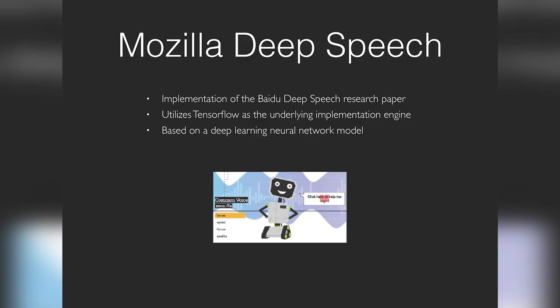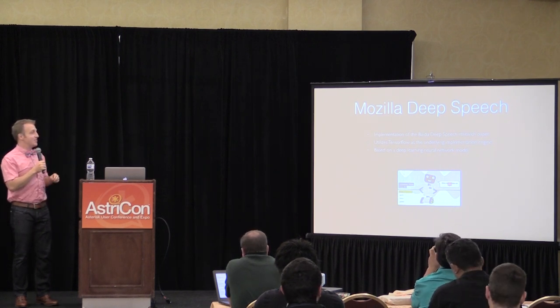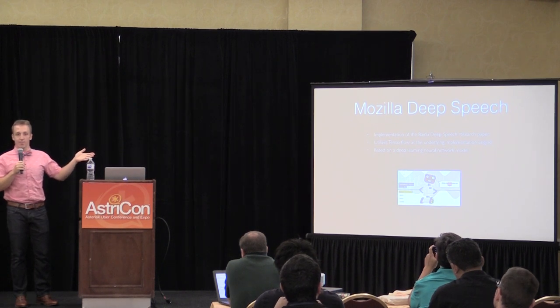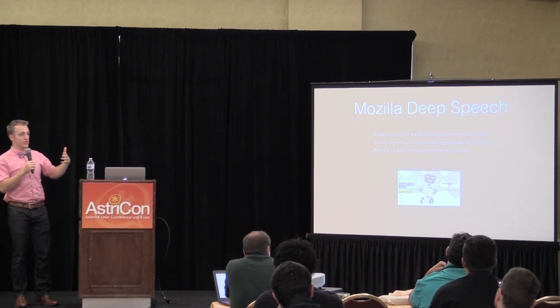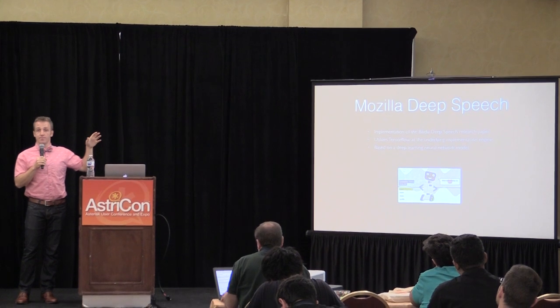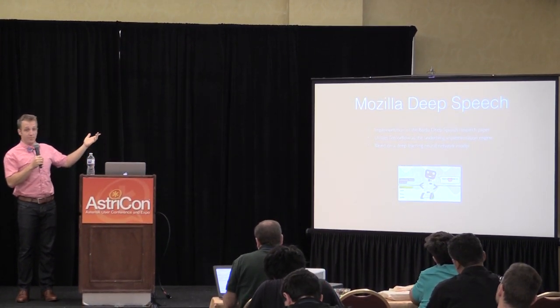Speech recognition — now we're getting into the stuff that's more fun for us. This field is changing incredibly quickly. All three projects I'm about to talk about were papers released this year, as recently as May. Things are changing almost month by month and getting better and better. Deep Speech is an implementation — Baidu released a paper based on neural net and backpropagated recurrent neural networks for speech analysis. This is ASR. Somebody then used that with TensorFlow to actually do the neural networking, and Deep Speech is the result — an open source Mozilla project.